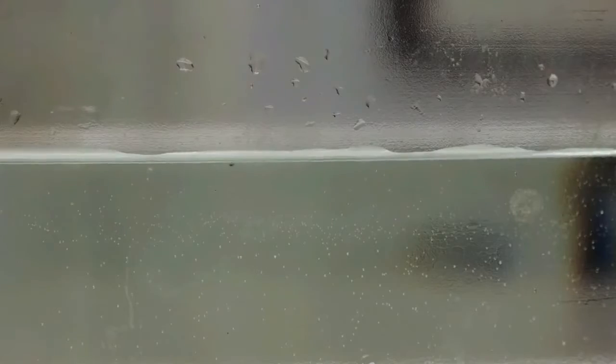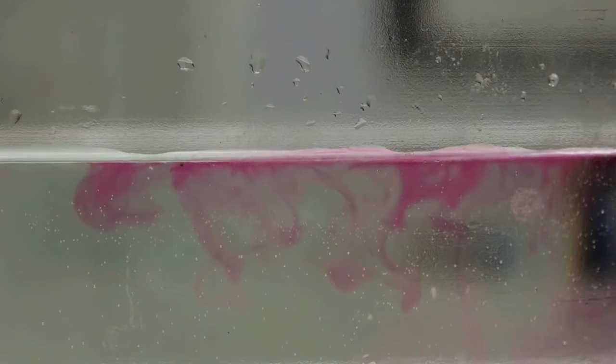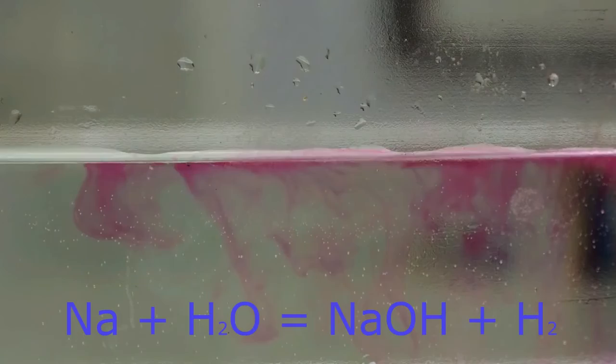This time the metal was dropped directly into the water. The sodium reacts with water and produces sodium hydroxide, which is alkaline, and this causes the phenolphthalein to turn purple.